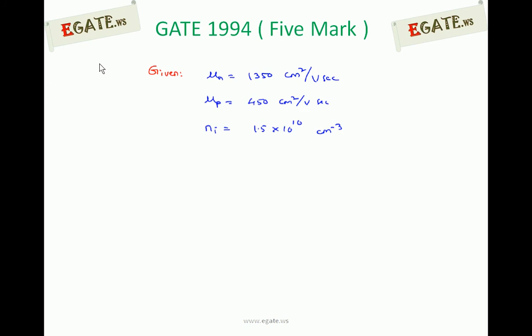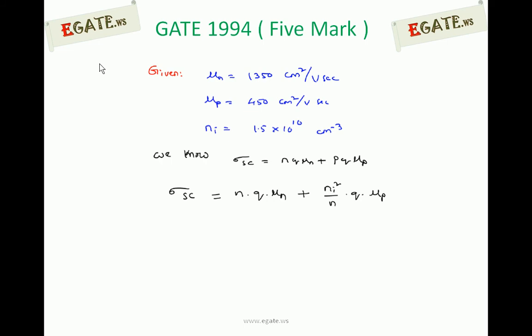The given information is μn = 1350 cm² per Vs, μp = 450 cm² per Vs, and the intrinsic carrier concentration Ni for silicon is 1.5 × 10¹⁰. All these values relate to silicon. We know the conductivity of a semiconductor depends on both electrons and holes, so σ = nqμn + pqμp.